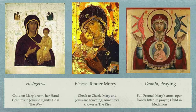The first type, shown on the left, is Hodogatria, which refers to Mary pointing the way to Jesus. The child Jesus is seated on his mother's arm, and her hand gestures to Jesus to signify that he is the way to salvation. In the center is Eleusa, meaning Tender Mercy, where the child and his mother are touching cheek to cheek. There is more intimacy, with the child reaching up to his mother's neck — this type is sometimes known as the Kiss.